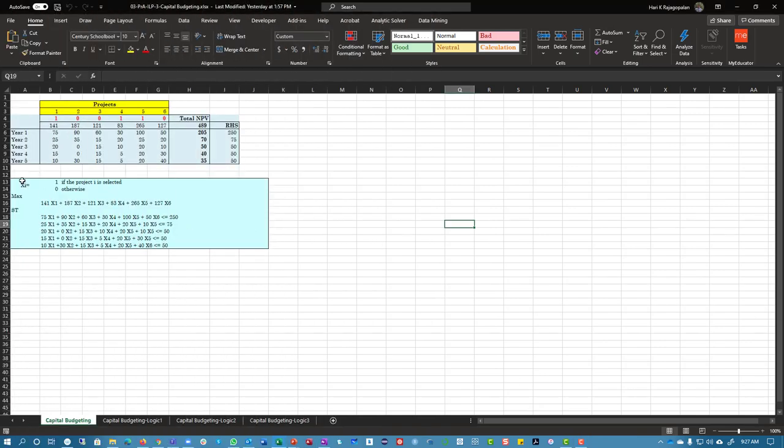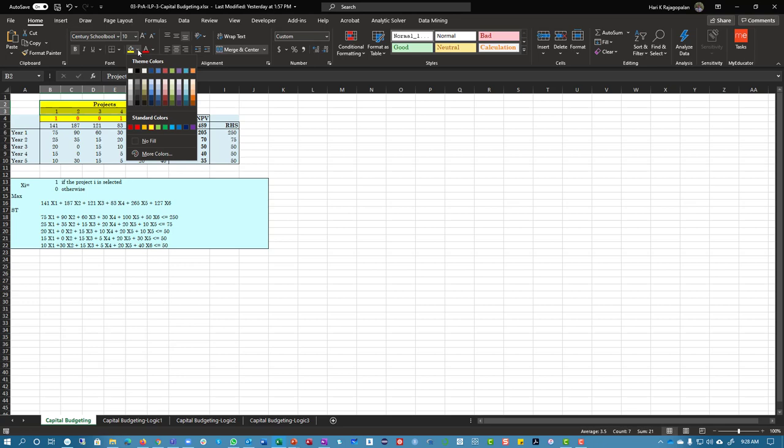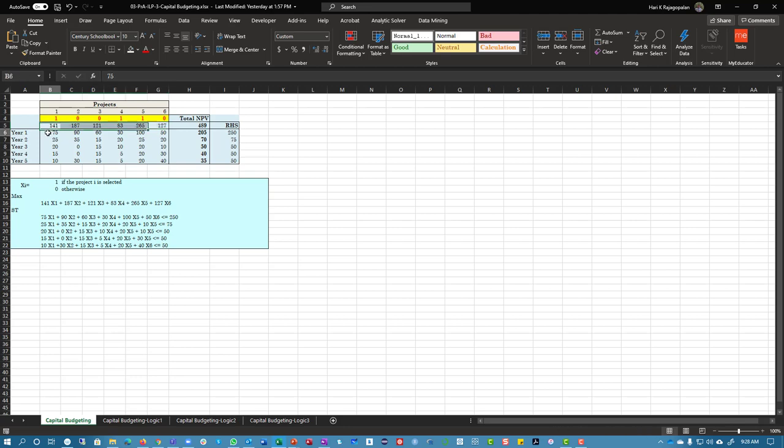All right, so here we have the model, and we're setting it up very similar. You have x1, x2, x3, x4, x5, x6. You're going to leave this row blank. All right, these here were your projects. This is your objective coefficient. These are your constraint coefficients. Some product. Nothing has changed.